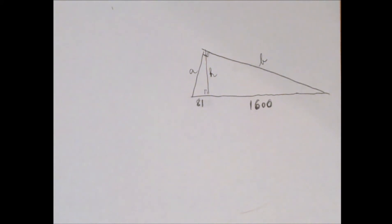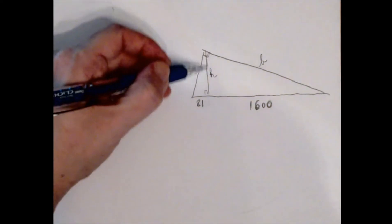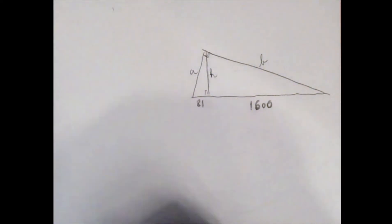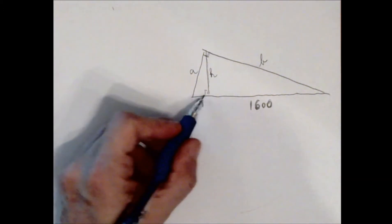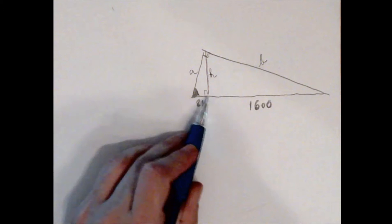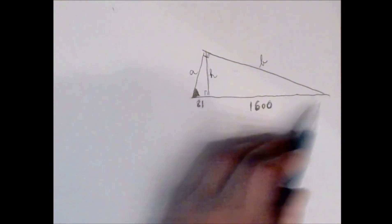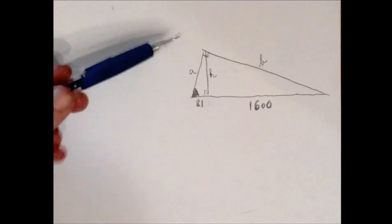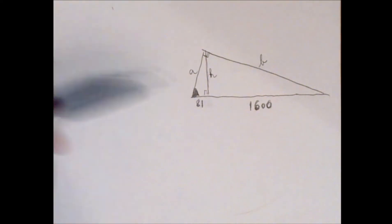In a right triangle, when we draw in the altitude belonging to the hypotenuse, we destroy that right angle but we create two new ones. If this angle is beta and this is a right angle, that forces this third angle to be alpha.